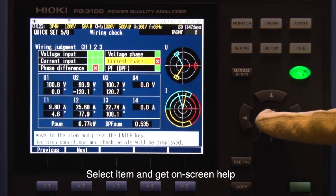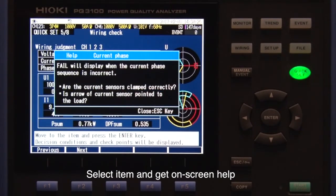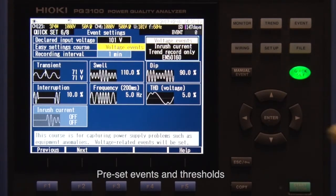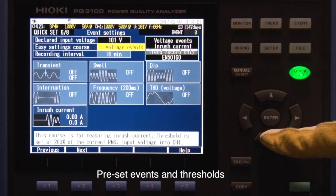Select the items you want to adjust and get tips on how to fix the problems. Within the quick set function under easy settings, you can choose from several different measurement scenarios.